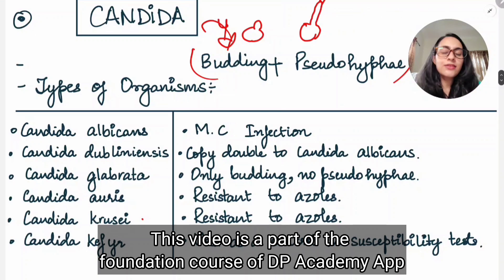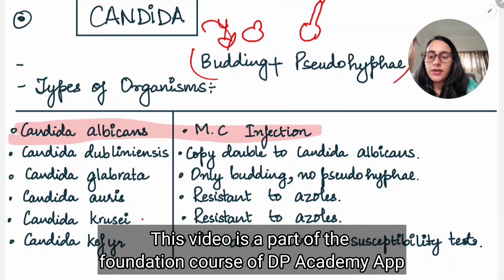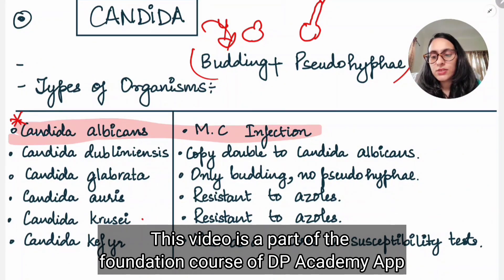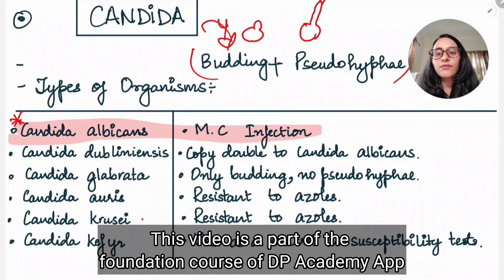What are the various types of Candida? We have Candida albicans, that is the most common, which causes oral thrush, vaginitis, ocular candidiasis, and vulvovaginitis. So all these things are seen with Candida albicans most commonly.